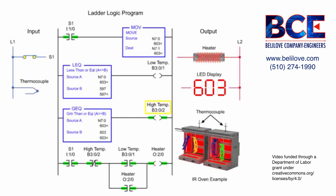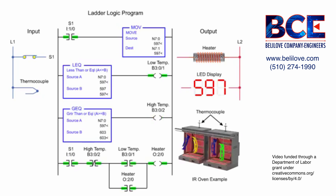When the high temp output is true, the heater turns off and remains off until the temperature reaches 597 degrees or lower. The cycle is repeated to maintain the average set point temperature of the oven at 600 degrees Fahrenheit.